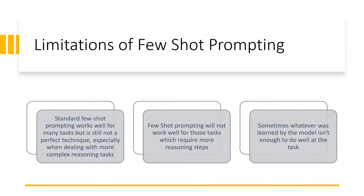Now we need to understand the limitations of few-shot prompting. Standard few-shot prompting works well for many tasks, but it is not a perfect technique. When complex reasoning is required, few-shot prompting will not work well for tasks that require more reasoning steps. If the task is straightforward you may get results, but if it requires more reasoning it may not. Sometimes whatever was learned by the model is not enough to produce the output you expect.